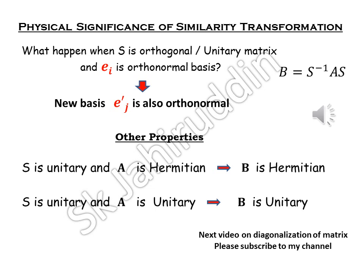So, we have some more properties. If your S is unitary and A is Hermitian, then B is also Hermitian. If your S is unitary and A is unitary, then B is also unitary. So, the Hermiticity and unitarity of the matrices are preserved in unitary transformation.